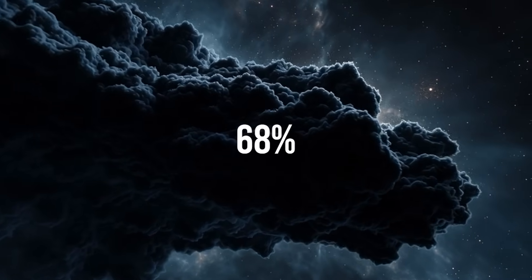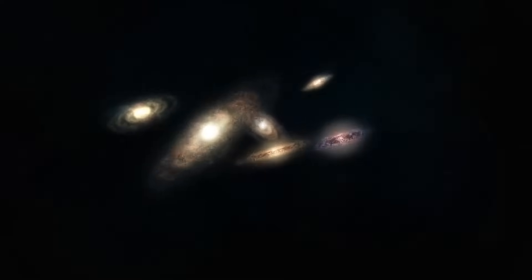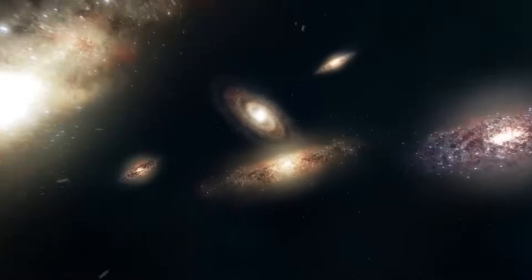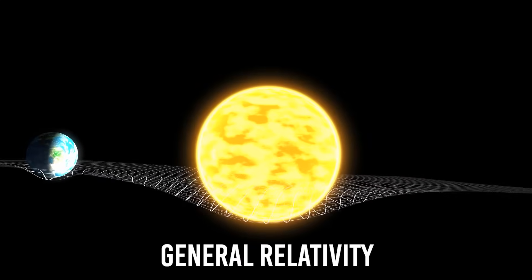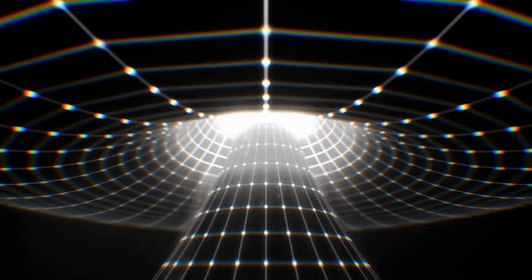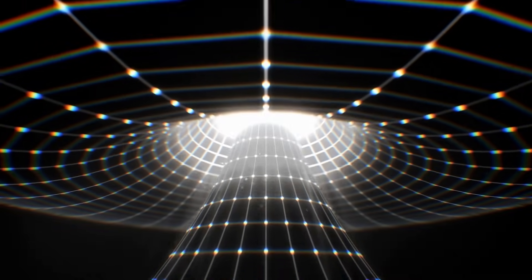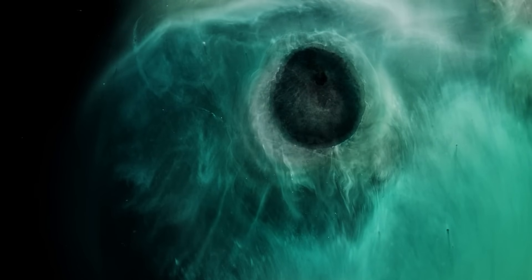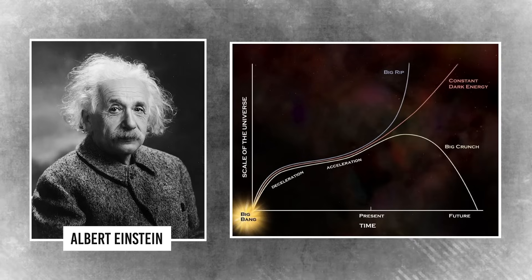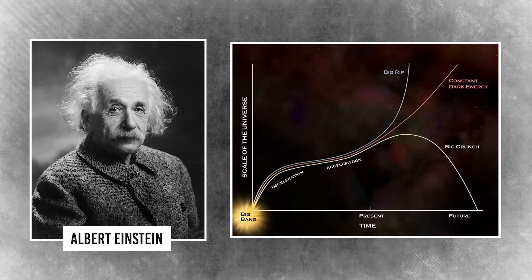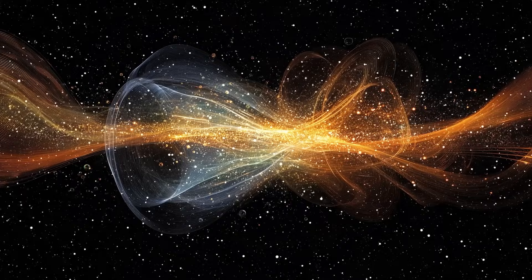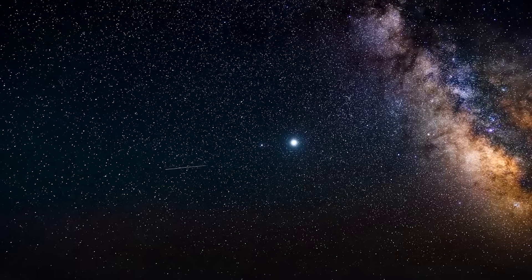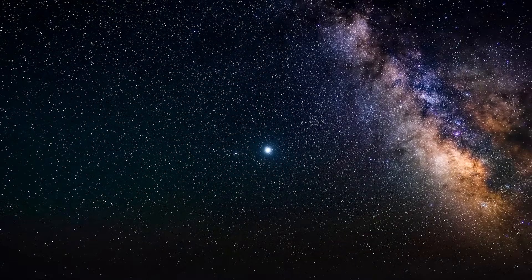Dark energy emits no light and interacts with no matter directly, yet its effect is felt within space-time itself. According to general relativity, gravity bends space and pulls objects together. But dark energy appears to do the opposite—it pushes space apart, continuously accelerating the expansion. This suggests that the concept Einstein once proposed as a cosmological constant, and later called his biggest blunder, might actually play a central role in shaping the future of the universe.